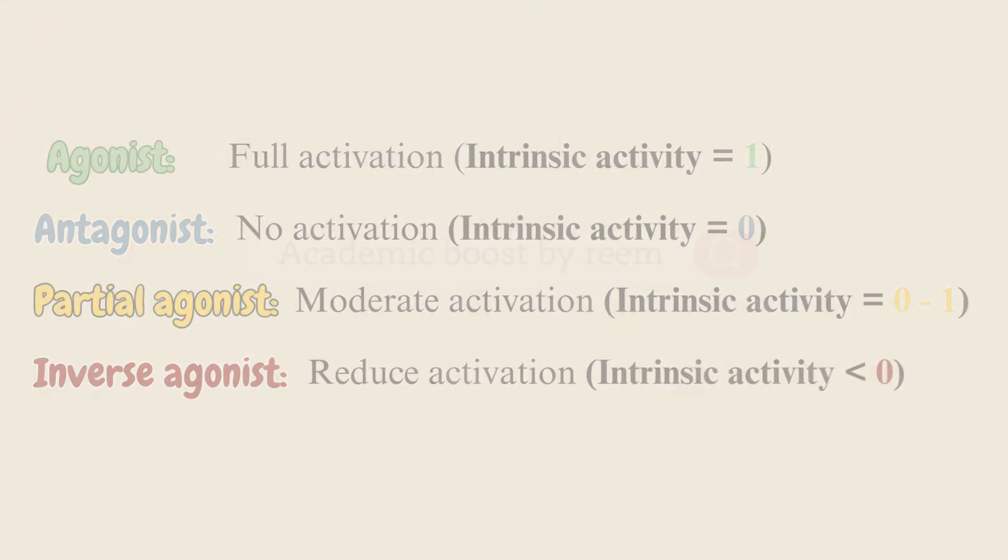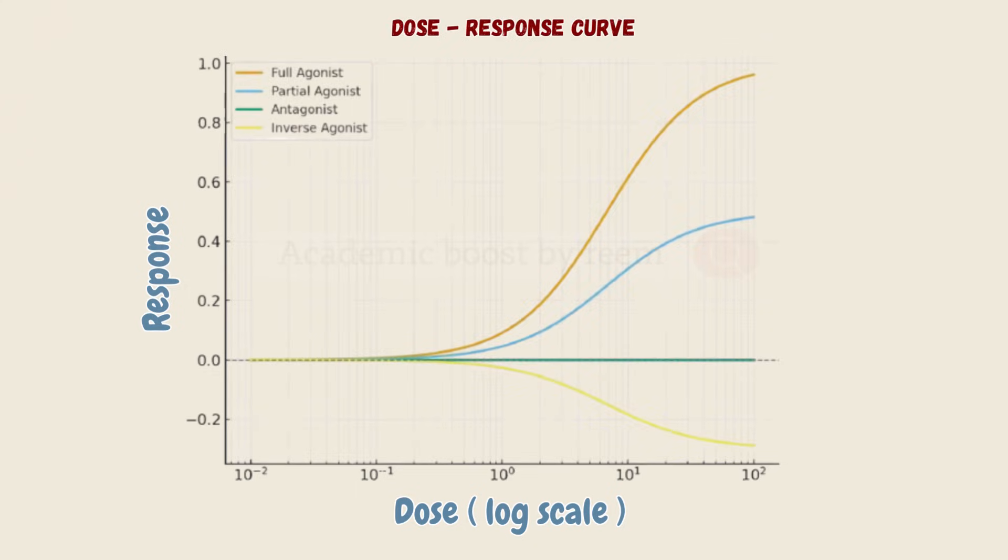In this curve, we have dose in logarithmic scale on the x-axis and the corresponding response on the y-axis. As shown, we have the full agonist in orange with intrinsic activity equal to one, a partial agonist in blue plateauing below the Emax of the full agonist with intrinsic activity between zero and one. As expected, at zero response we have the antagonist represented in green, and below zero we have the inverse agonist shown in yellow.